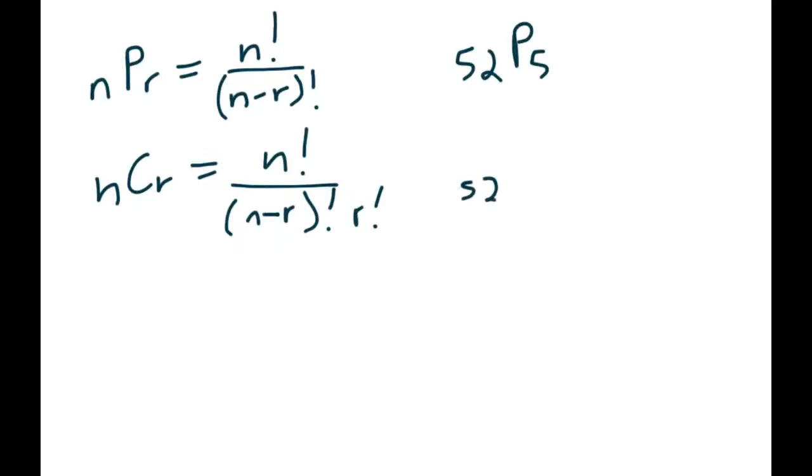If order didn't matter, we would use the same thing, but you'd use the C. So most card cases, it doesn't matter which way you get the cards, you can rearrange them however you want, so we'd use the C for most cases. So using these formulas, the difference would be 52 factorial over 52 minus 5 is 47. And then for the C notation, we use 52 over 47 again, but then we also have to divide by all the different ways we can arrange those five cards.